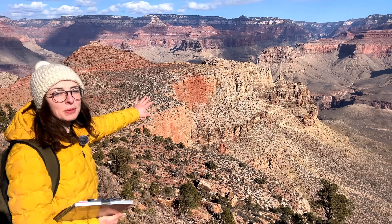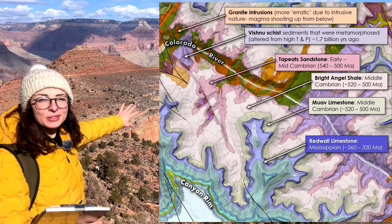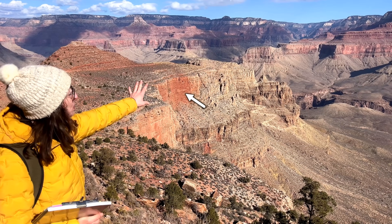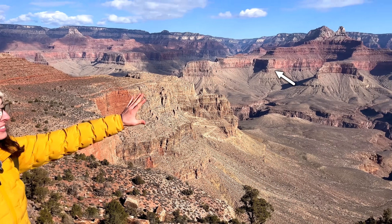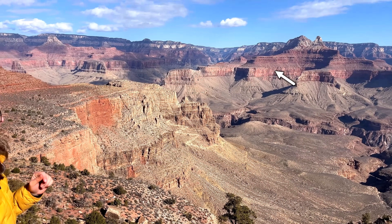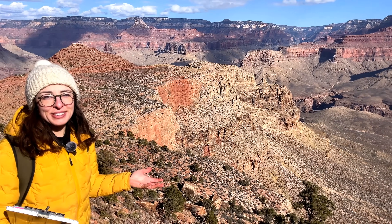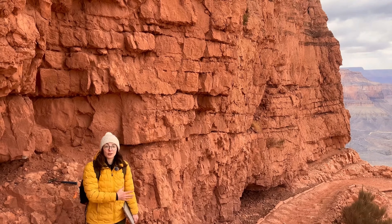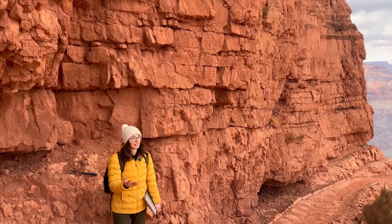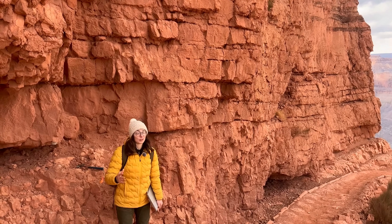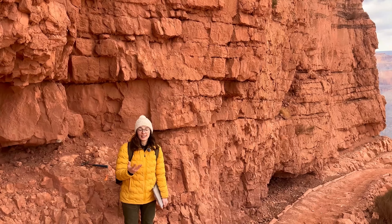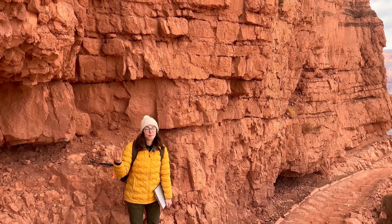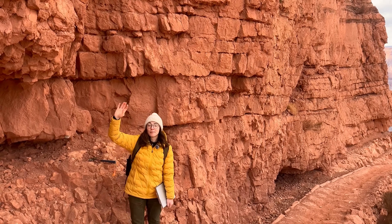As we continue moving up the rock layers, we get to the Red Wall Limestone, which you can see along this cliffside and pretty much anywhere if you look out into the distance in the Grand Canyon. There's a reason they named it the Red Wall Limestone — it's pretty well named. But this big red wall of limestone is actually not red limestone. Limestone is typically more white, tan, or gray, and this is no different — it's just been stained red by the very iron-rich deposits above it.